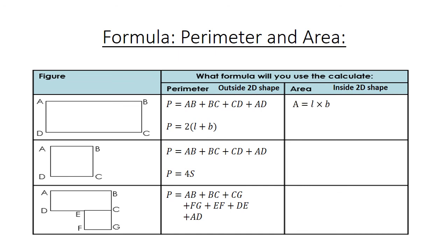Area for a rectangle equals length times breadth. Area for a square equals length to the power of 2. And the area for the third one is, first you are going to calculate the area for ABCD, which is length times breadth.